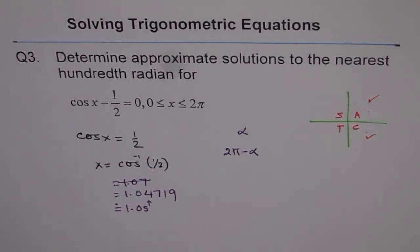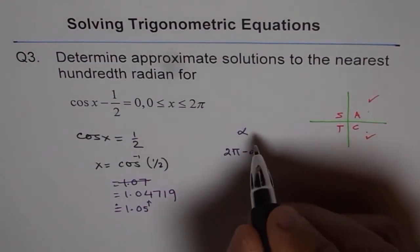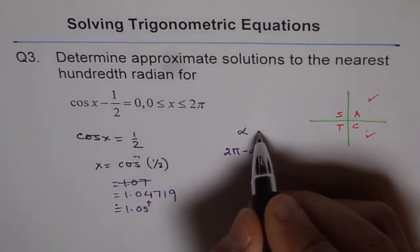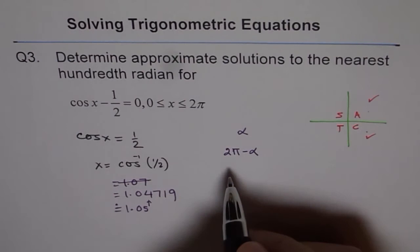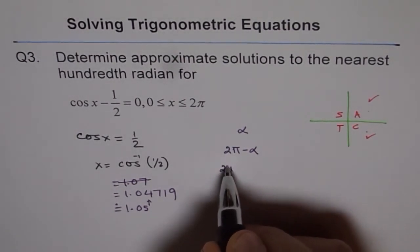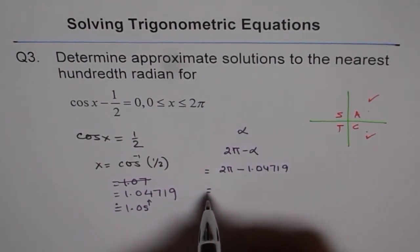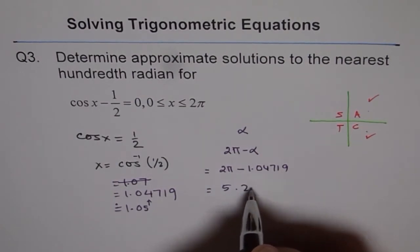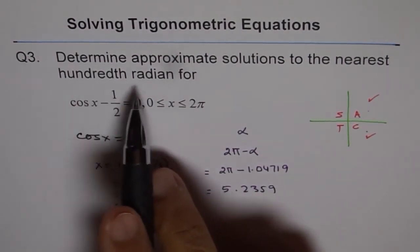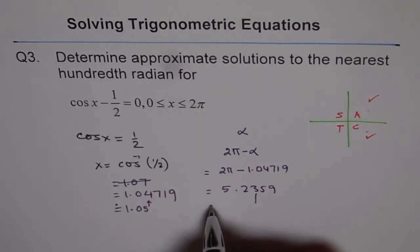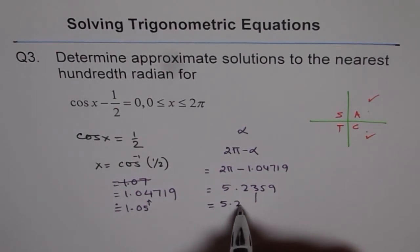The second answer is 2 pi minus alpha, so we calculate 2 times pi minus 1.04719. Use four digits for precision. That gives us 5.2359, which rounds to the nearest hundredth as 5.24.